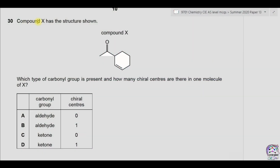Compound X has the structure shown. Which type of carbonyl group is present and how many chiral centers are there in one molecule of X? This is the carbonyl group, and on both sides of the carbon we can see two different groups attached — one is an alkyl group and one is another group — so therefore it is a ketone. The answer could be either C or D.